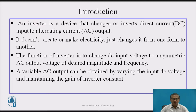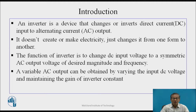Introduction. An inverter is a device that changes or inverts direct current DC into alternating current AC output — it simply converts DC to AC. It does not create or make electricity, just changes it from one form to another. The function of an inverter is to change DC input voltage to a symmetric AC output voltage of desired magnitude and desired frequency.